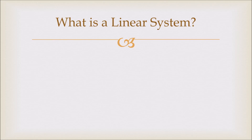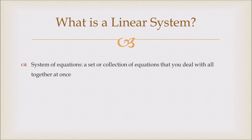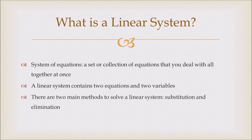So what is a linear system? Well, it's a subset of something called systems of equations, which are a set or collection of equations that you deal with all together at once. A linear system contains two equations and two variables. There are two main methods to solve a linear system: substitution and elimination.